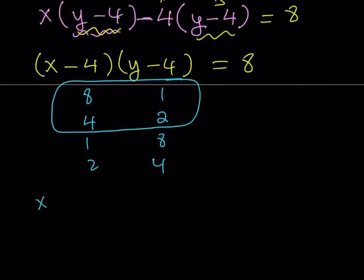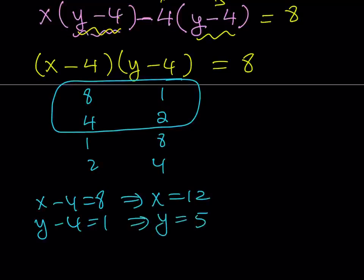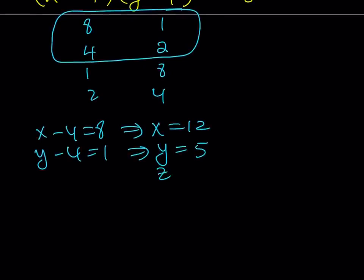So let's go x - 4 = 8, which means from here x = 12. y - 4 = 1 gives me y = 5. And of course, this is a right triangle, so z must be 13. That gives me one of the solutions.